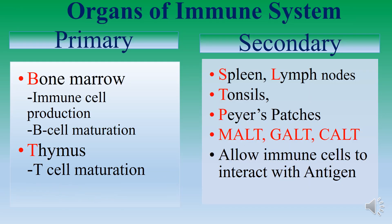The organs of the immune system include primary organs and secondary organs. The primary organs are the bone marrow and the thymus. In the bone marrow, immune cell production takes place; the cells are known as B cells, and these B cells undergo maturation in the bone marrow. In the thymus gland, T cell maturation takes place. The secondary organs include the spleen, lymph nodes, tonsils, and Peyer's patches. These include MALT, GALT, and COLT, which allow immune cells to interact with antigen.